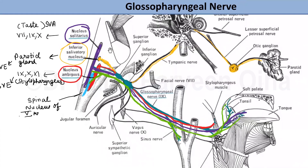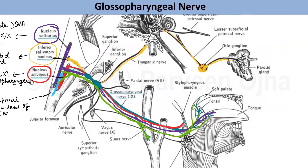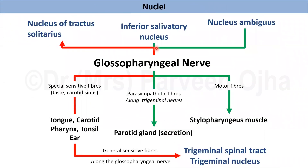So the three nuclei of origin of the glossopharyngeal nerve are: first, inferior salivatory — a secretomotor parasympathetic nucleus; second, nucleus ambiguus — a motor nucleus for the muscles; and third, nucleus tractus solitarius — for taste and general sensations from the tongue, pharynx, soft palate, carotid sinus, and carotid body. Fibers from all these nuclei collectively form the glossopharyngeal nerve, which is a mixed nerve carrying parasympathetic, motor, and sensory fibers.